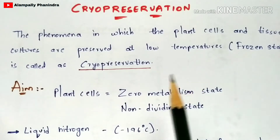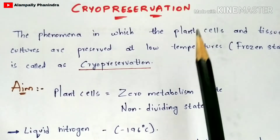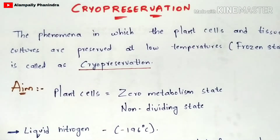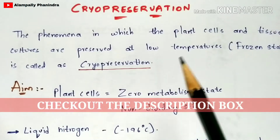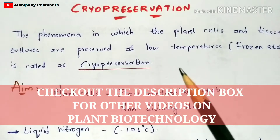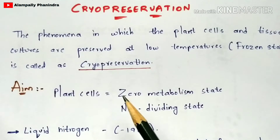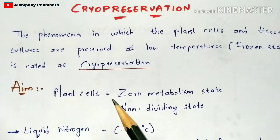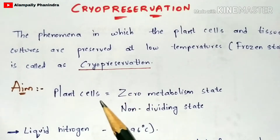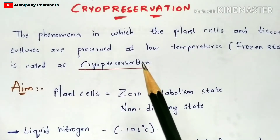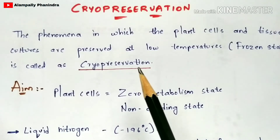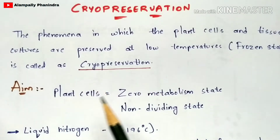As I'm making a series on plant biotechnology, I have mentioned plant cells as well as tissue cultures. But not only plant cells and tissue cultures — you can also store many other biological materials. For example, sperms, gametes, embryos, tissues, bone marrows, and organs. There are many types of uses of cryopreservation for preserving many types of biological materials.